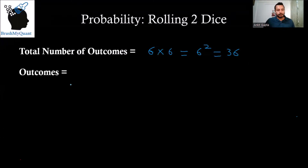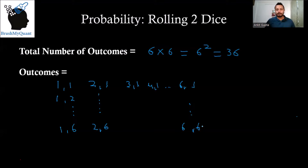What are those outcomes? In the first die you can get a one and in the second die also a one. You can get one comma two all the way to one comma six. Similarly, you can get three comma one, four comma one, and so on all the way till six comma one, and then all numbers up to six comma six. These are the 36 outcomes you can get when rolling two dice.